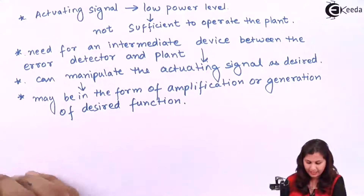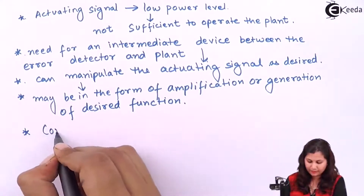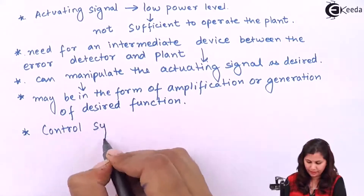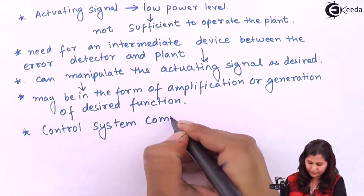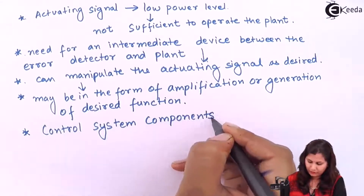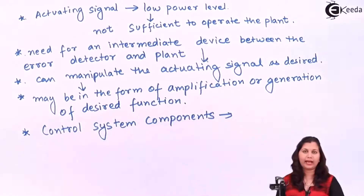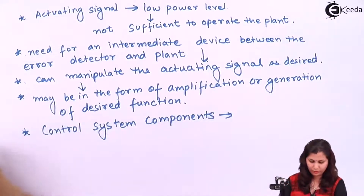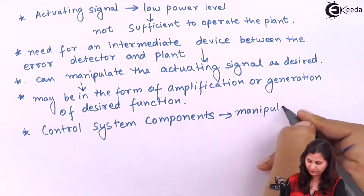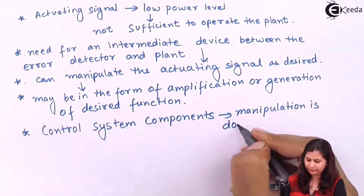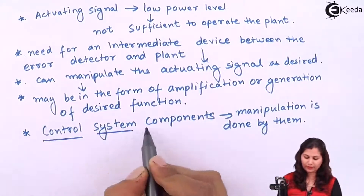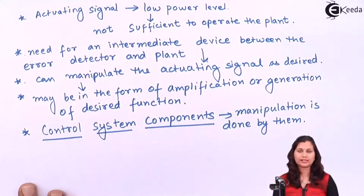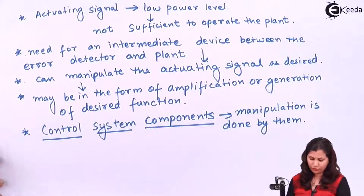These intermediate devices are known as the control system components. There are some components which can manipulate the actuating signals. Each control system component is introduced in the system to perform some specific function.